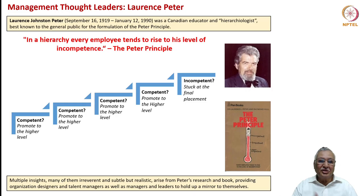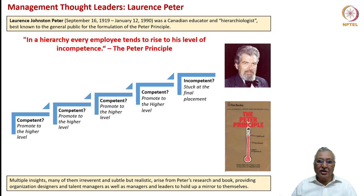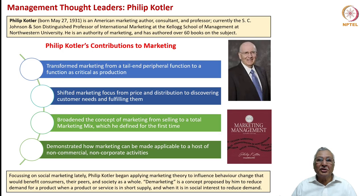Today we start with Lawrence Peter. Everyone who understands the lighter side of management with serious implications knows about Lawrence Peter. He postulated the Peter Principle, which says that in a hierarchy every employee tends to rise to his level of incompetence. The process goes: competent, get promoted; competent, promoted again; and eventually incompetent at final placement. Multiple insights in this book seem irreverent and laced with subtle humor, but they are realistic, arising from Peter's research, providing a mirror for organization designers, talent managers, and leaders.